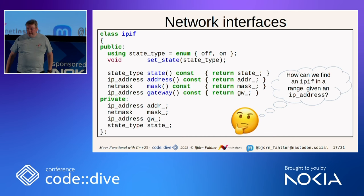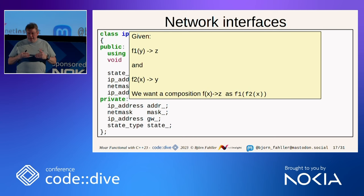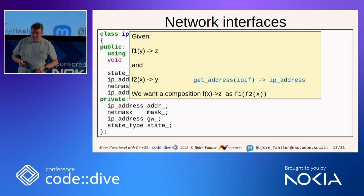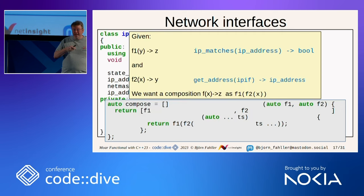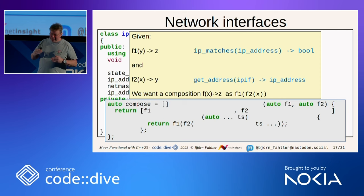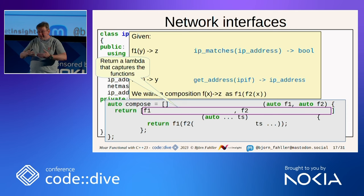Now, how can we find an IP interface in a range given an IP address? If I have a function f1 that takes a Y and returns a Z, and a function f2 that takes an X and returns a Y, I want a composition: a function that takes an X and returns a Z by calling f1(f2(x)). If f2 is `get_address` and f1 is `ip_matches`, then we're home and dry. We can implement this with `compose(f1, f2)` — it returns a lambda that captures f1 and f2, and when called, calls `f1(f2(args...))`. Nothing unexpected here.